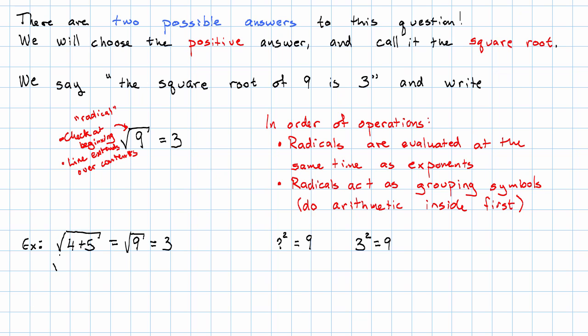On the other hand, if I have the square root of 4 plus 5 with just the 4 now inside the radical, well, first radicals happen at the same time as exponents, which is before addition. I think what to the second power gives me 4? Well, 2 to the second power gives me 4. And so I'll have 2 plus 5, which is 7. Notice that those are different, so it's important to pay attention to what is written inside the radical.